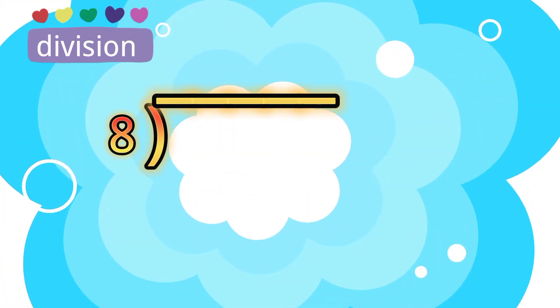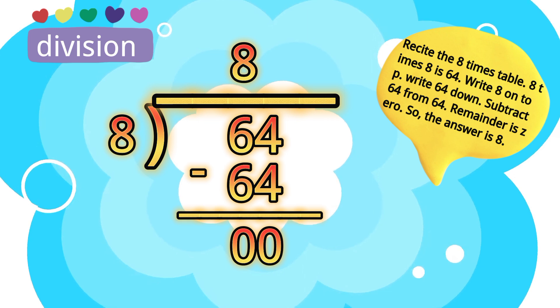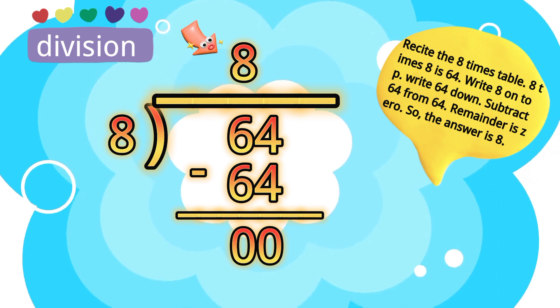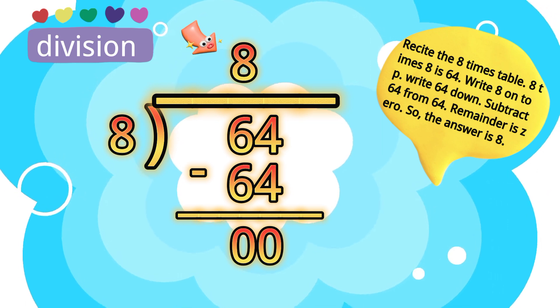Long division method. We divided 64 by 8. Recite the 8 times table. 8 times 8 is 64. Write 8 on top. Write 64 down. Subtract 64 from 64. Remainder is zero. So the answer is eight.